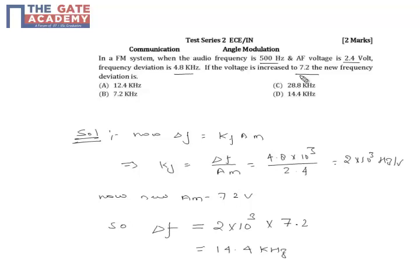Now to solve this question, first we will see the expression for del f, that is frequency deviation. It is given as del f equal to kf into am, where kf is our constant for frequency modulation system and am is our amplitude of our modulating signal.